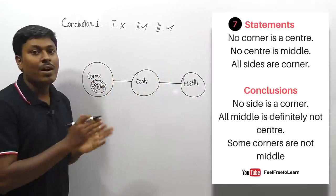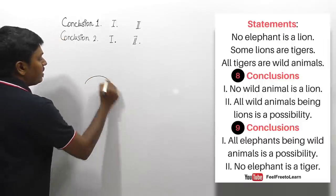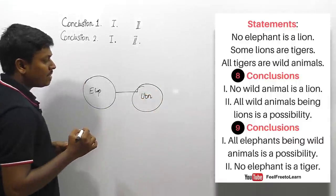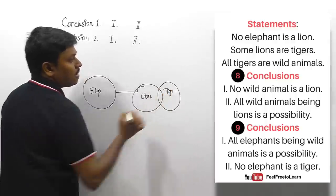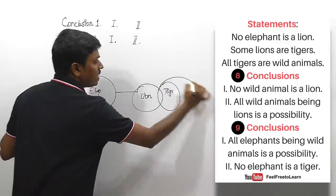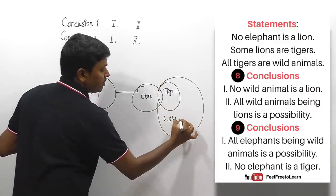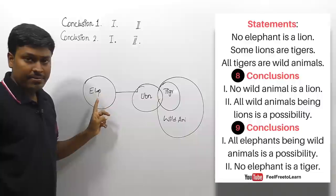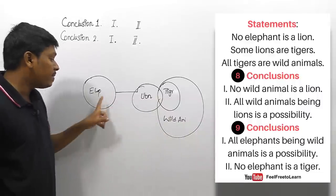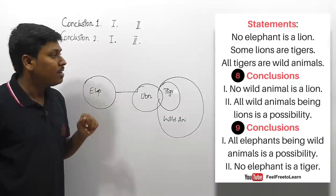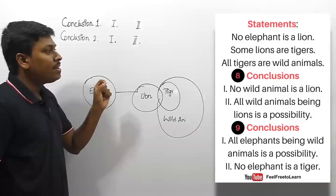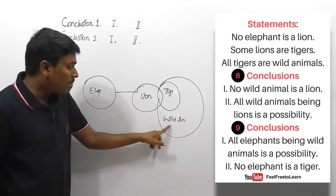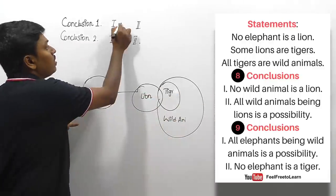Next question. Statements: 'no elephant is a lion,' 'some lions are tigers,' and 'all tigers are wild animals.' From the Venn diagram: no link between elephant and lion, but there is a possible connection between tiger and elephant, and wild animal and elephant. First set, conclusion one: 'no wild animal is a lion' — wild animals and lion are inside a single Venn diagram, so 'no' conclusion does not follow.